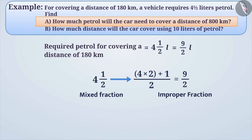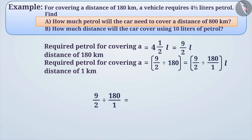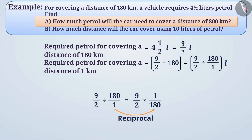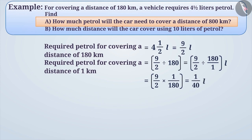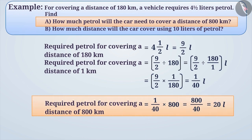Thus, required petrol for covering a distance of 1 km is equal to 9/2 divided by 180, or we can write it as 9/2 divided by 180/1. To divide fractions, we keep the first fraction as it is and then multiply it with the reciprocal of the second fraction. Therefore, petrol for covering a distance of 1 km is equal to 9/2 into 1/180, which is equal to 1/40 litres. Thus, petrol required to cover a distance of 800 km is equal to 1/40 into 800, which is equal to 800/40, which is equal to 20 litres. This means the vehicle must have 20 litres of petrol in it.